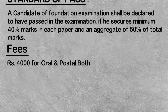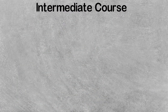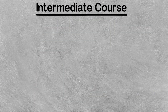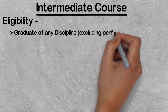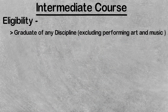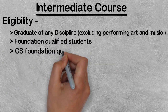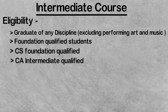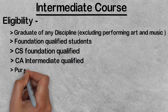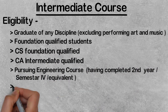Next, let's talk about the Intermediate course. Let's see who is eligible for the Intermediate course: all graduates (excluding performing arts and music), Foundation qualified students, CS Foundation qualified students, CA Intermediate qualified students, and engineering students who are in second year or have completed it, as well as qualified engineers.